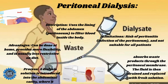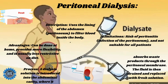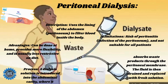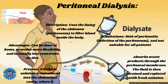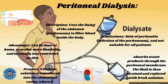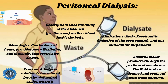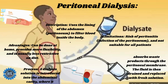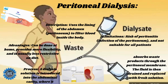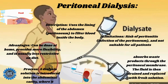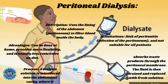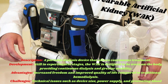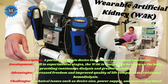Second, peritoneal dialysis: this method uses the lining of the abdomen to filter blood inside the body. A dialysis solution is introduced into the abdominal cavity, where it absorbs waste products through the peritoneal membrane. The fluid is then drained and replaced with fresh solution. Advantages include the ability to be done at home, providing more flexibility and being usually less restrictive on diet. Limitations include risk of peritoneal infection and it is not suitable for all patients.